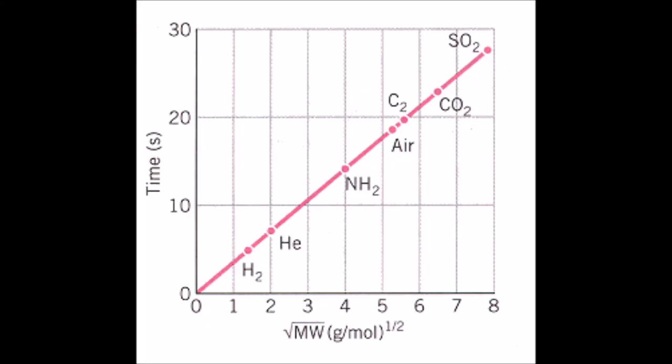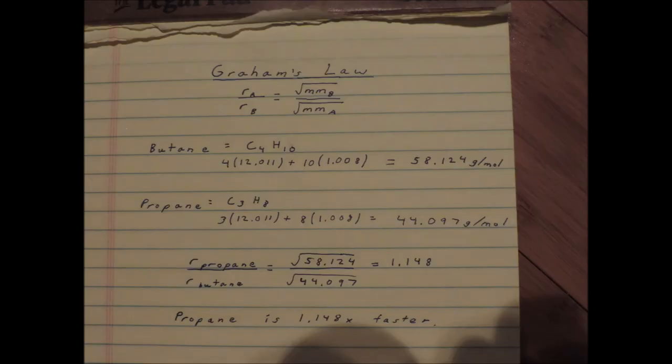This graph here shows the direct relationship between molar mass and the time of dispersion. In order to calculate the theoretical ratio of the rates of the gases, we first found the molar mass for each. Using those molar masses and the equation for Graham's Law, we found out that propane is estimated to be 1.1481 times faster than butane.